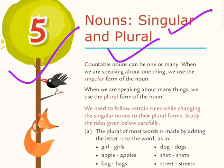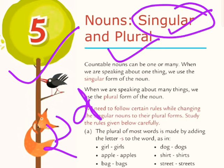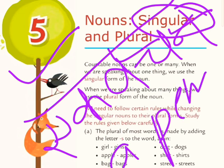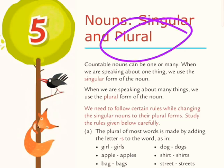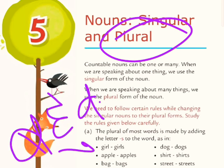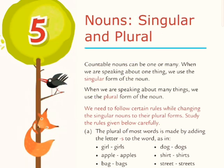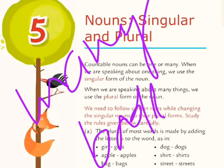First of all, I am going to tell you what singular means. Singular means one thing — for example, 'I have a pen' means there is one pen. And plural means many things — for example, 'you have many books.' Many means there are many books, so plural means there are many books.